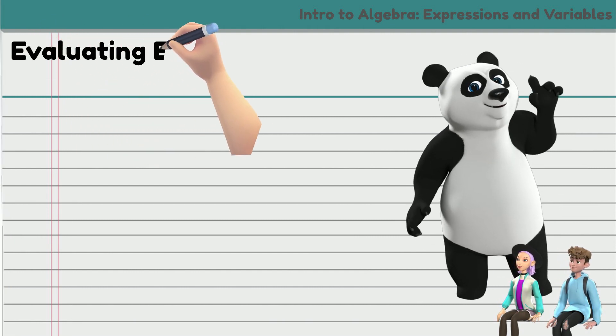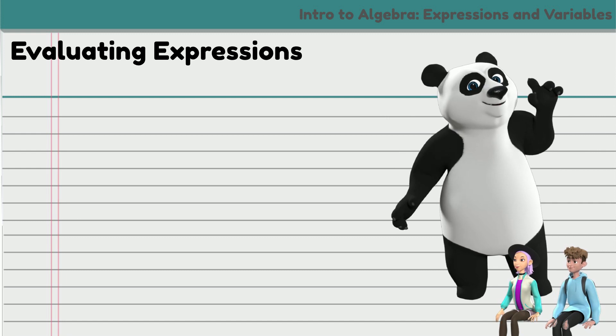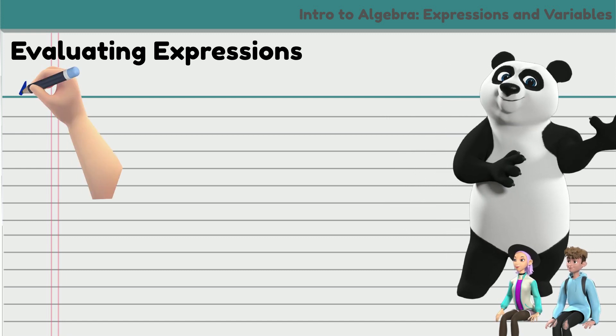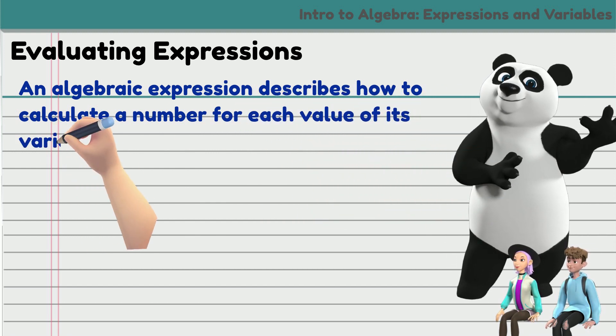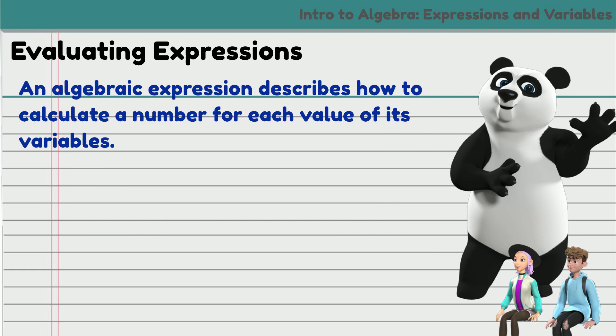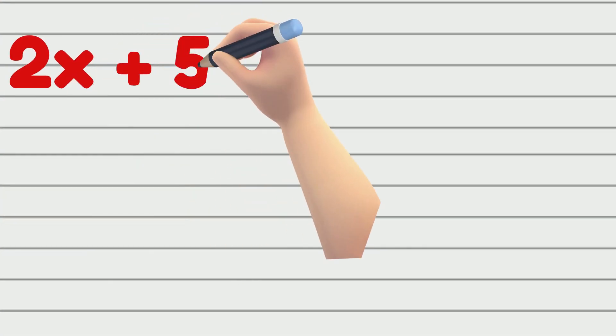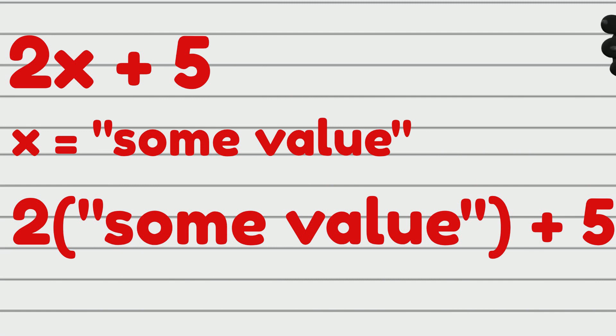Now, let's look at evaluating expressions. Unlike a numeric expression, an algebraic expression has no definite value. Instead, an algebraic expression describes how to calculate a number for each value of its variables. To evaluate an algebraic expression, say 2x plus 5, for some value of x, you substitute that value for x and then perform the operation.